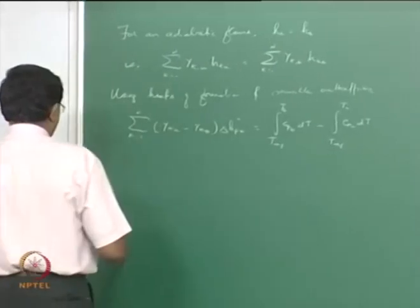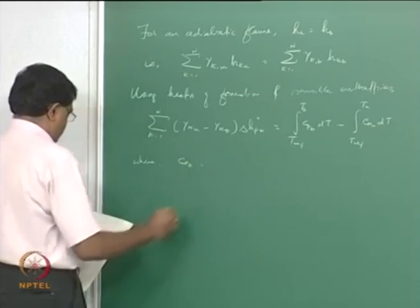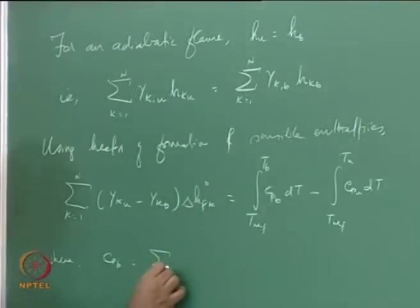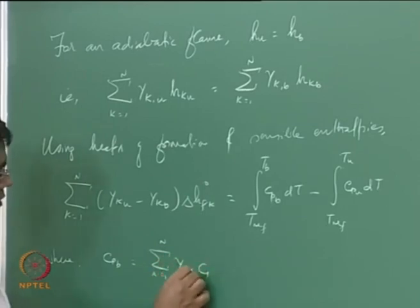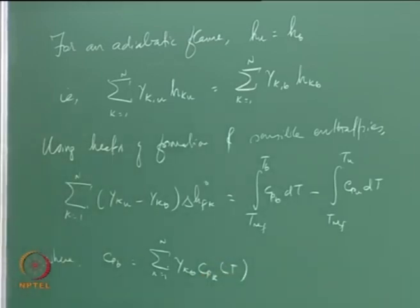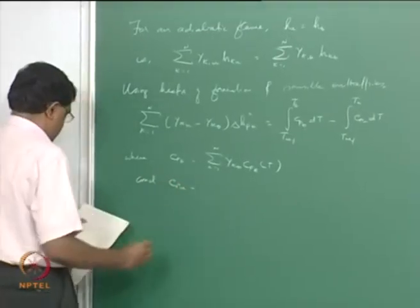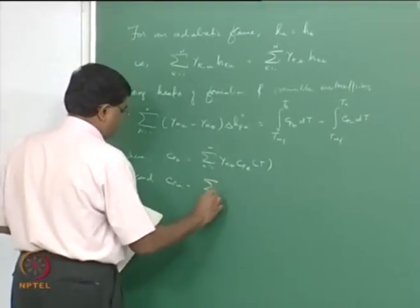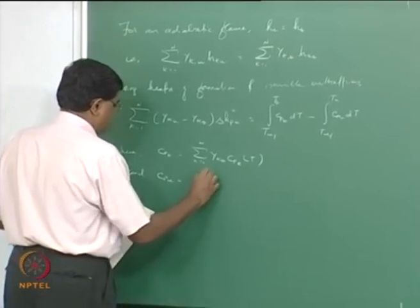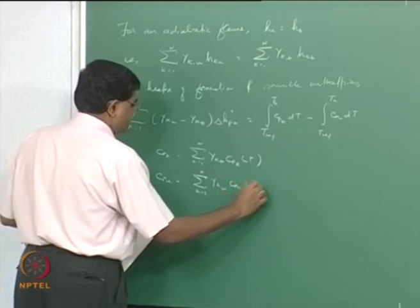Here C_{PB} equals sigma k=1 to n of y_{kb} c_{pk}(T), and C_{PU} equals sigma k=1 to n of y_{ku} c_{pk}(T).